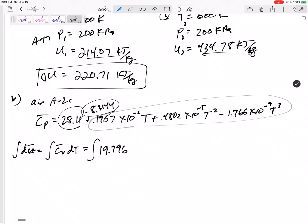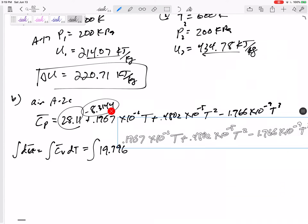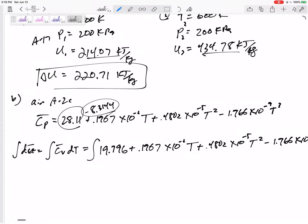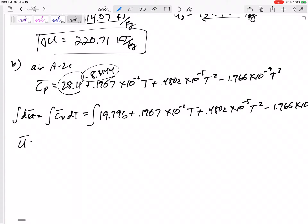I'm taking the integral of that with respect to T. The integral of that is going to give me delta U bar. So this would be 19.796 T, 0.1967 times 10 to the negative 2 T squared over 2, plus 0.4802 times 10 to the negative 5 T cubed over 3, minus 1.966 times 10 to the negative 9 T to the 4 over 4.